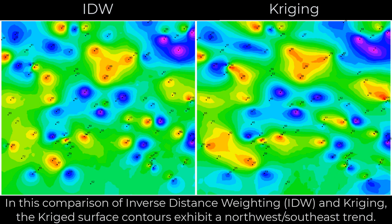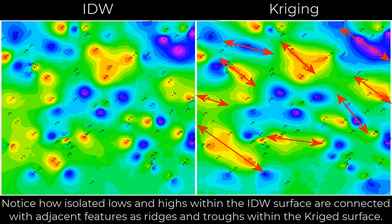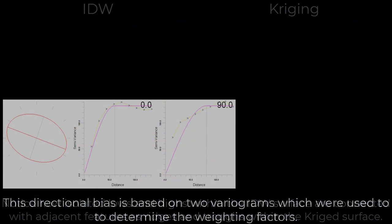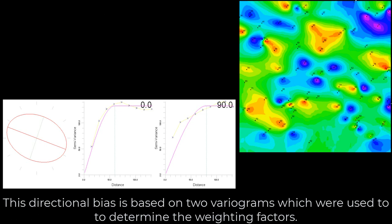In this comparison of inverse distance weighting or IDW and Kriging, the Kriged surface contours exhibit a northwest-southeast trend. Notice how isolated lows and highs within the IDW surface are connected with adjacent features as ridges and troughs within the Kriged surface. This directional bias is based on two variograms which were used to determine the weighting factors.